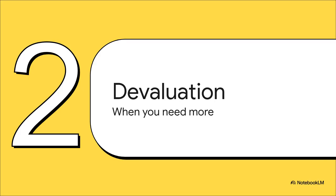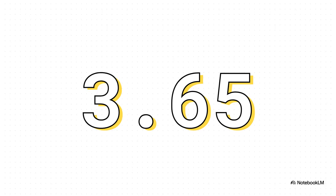Okay, so let's dive into our first big concept: devaluation. This is what we're talking about when we say the local currency — in this case, the shekel — is getting weaker. So remember our starting point: one US dollar costs 3.65 shekels. Simple enough.